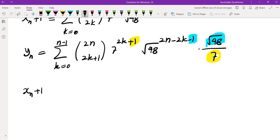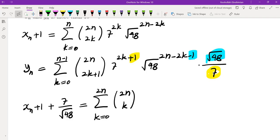If you take xn plus 1 and add 7 over root 48 yn, you would get the sum from k equals 0 to 2n of 2n choose k, 7 to the power of k, root 48 to the power of 2n minus k. And this is exactly 7 plus root 48 to the power of 2n.